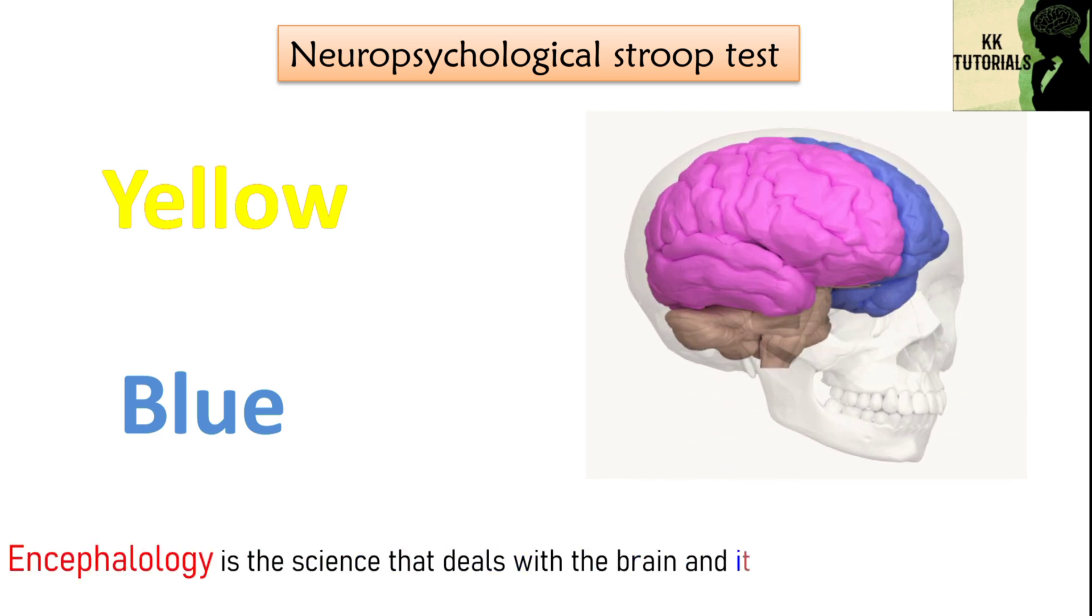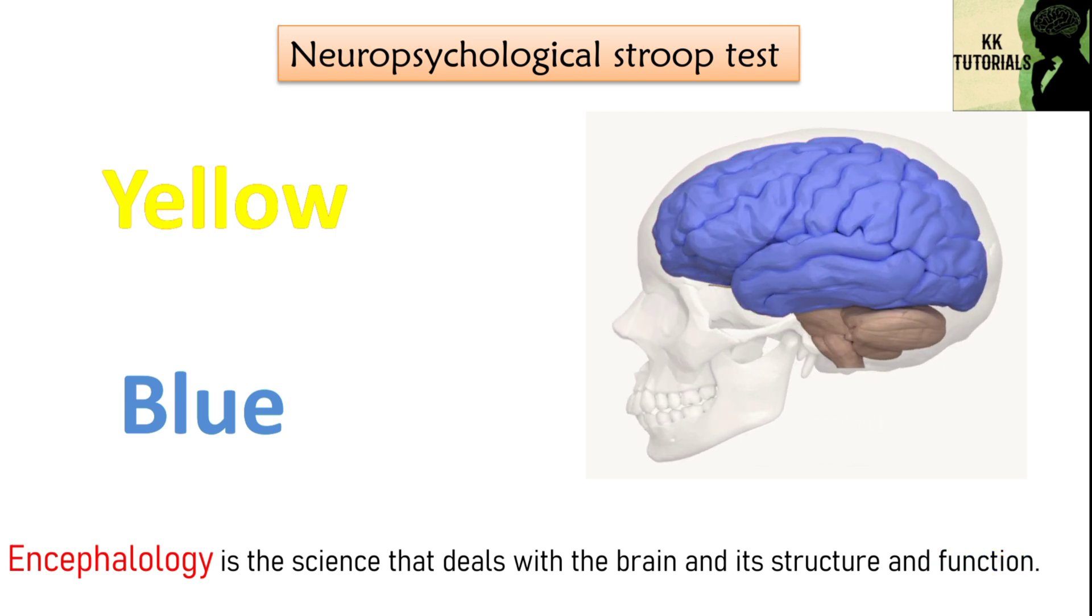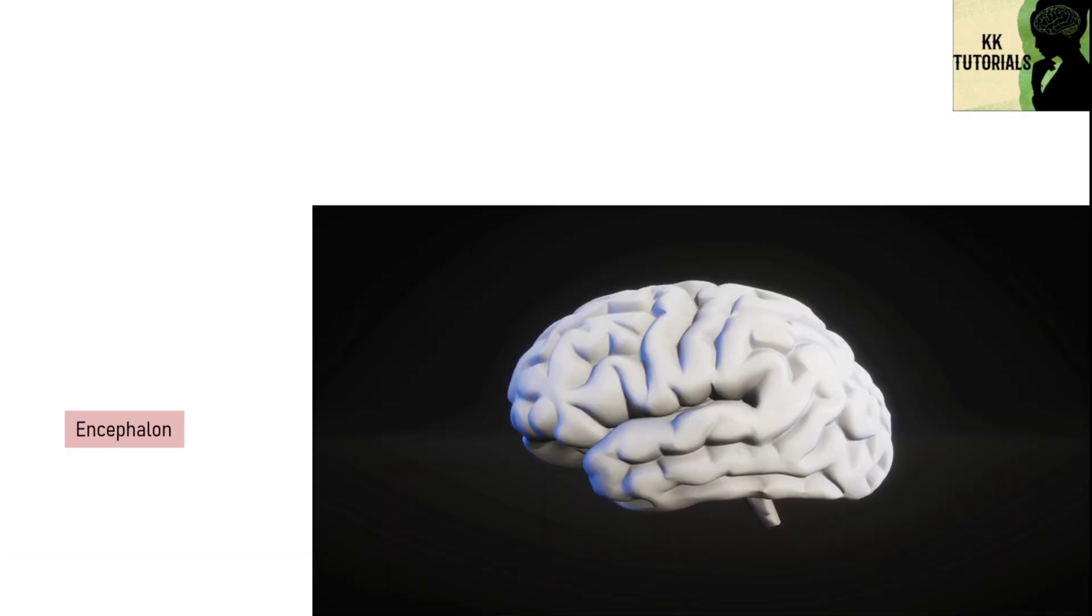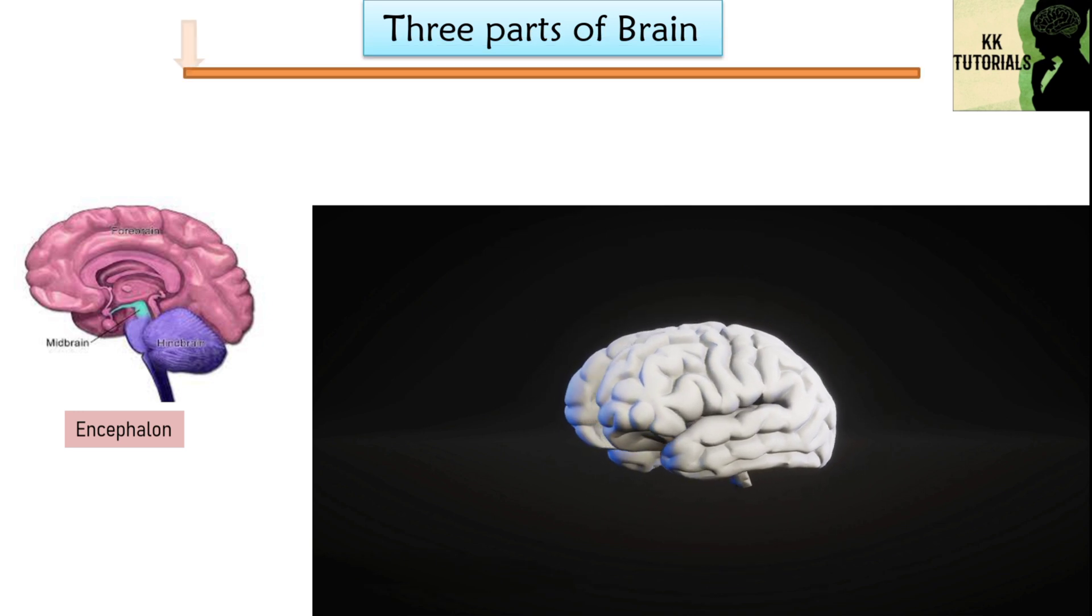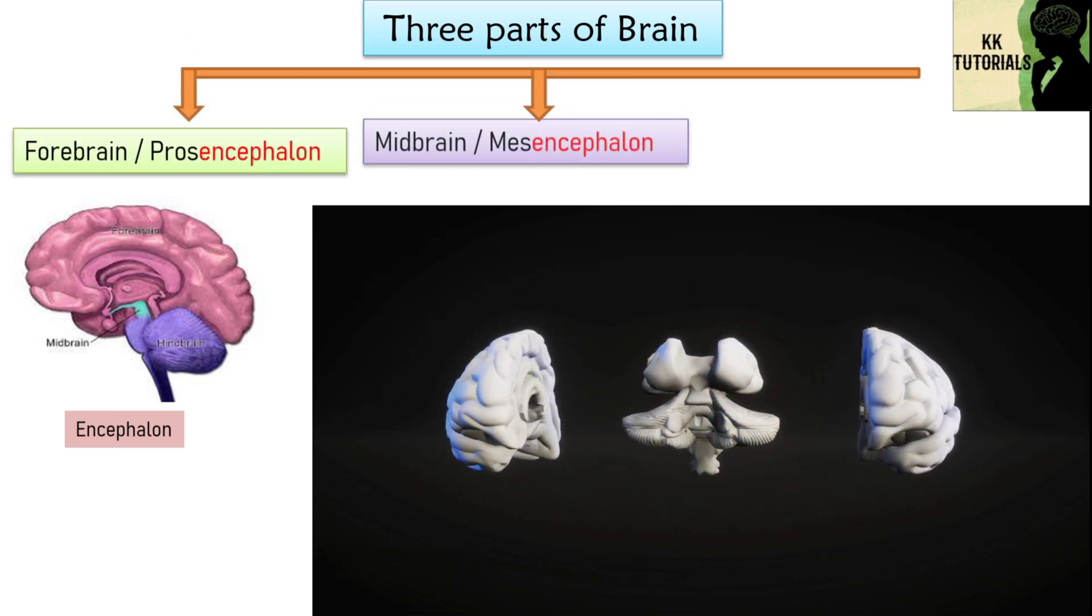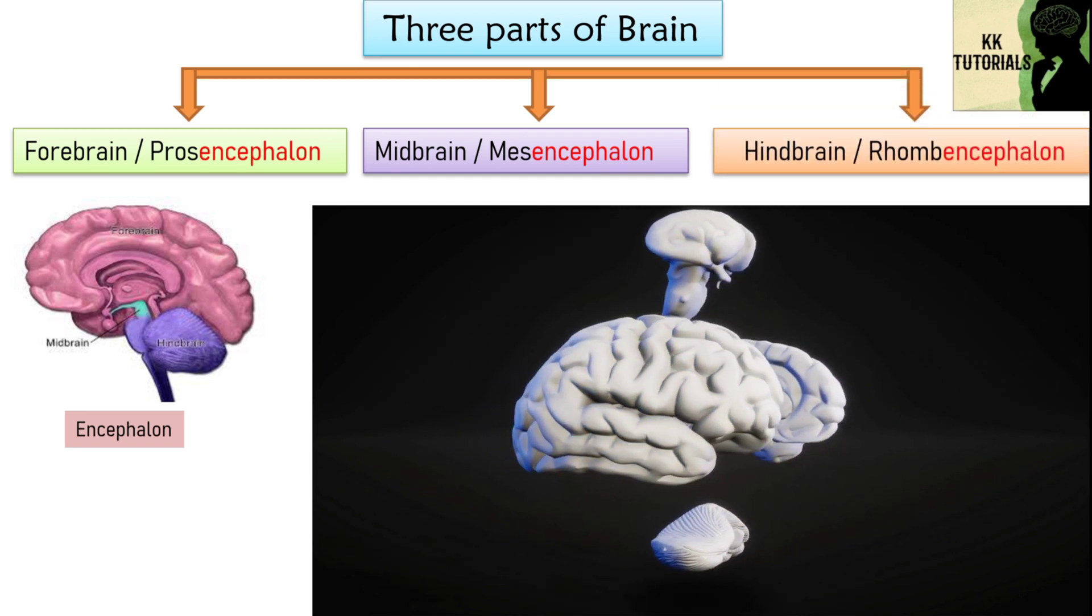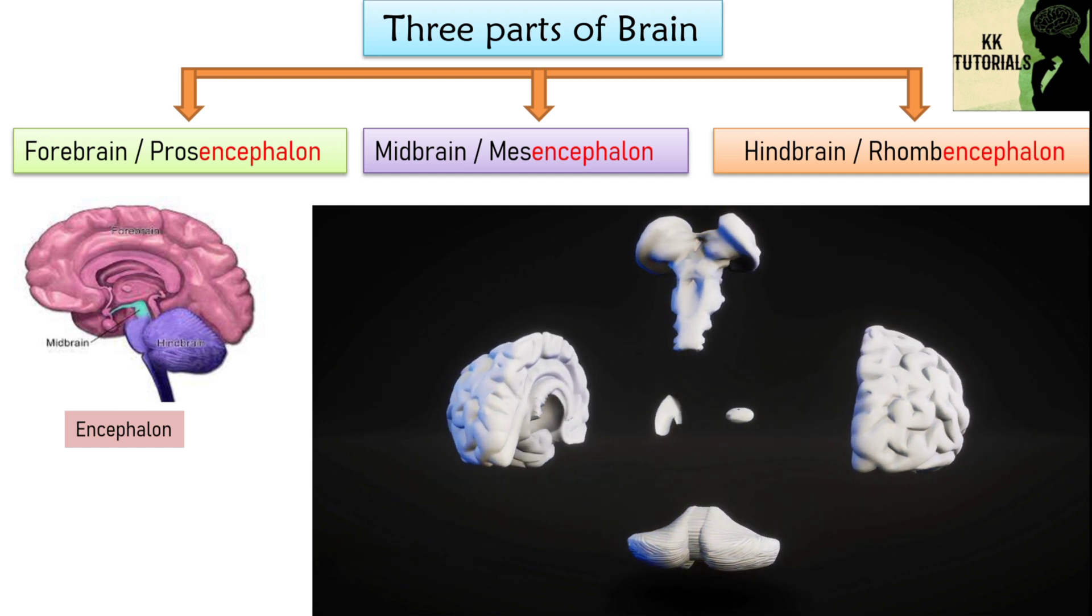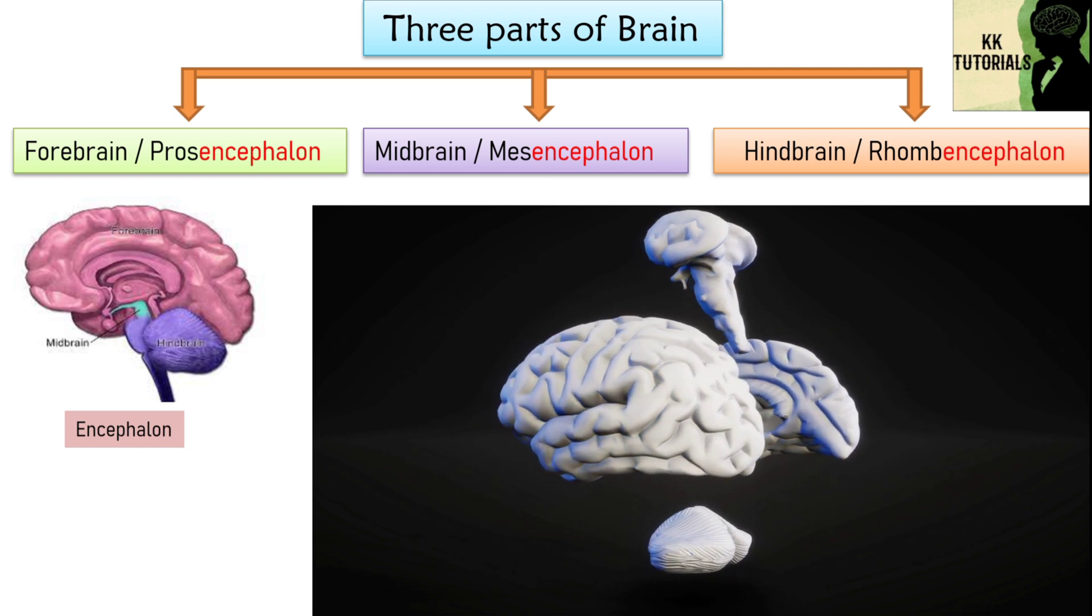Encephalogy is the science that deals with the brain and its structure and function. Human brain is divided into three parts. They are forebrain also called as prosencephalon, midbrain also called as mesencephalon and hindbrain also called as rhombencephalon. In image you can see all these three parts of brain. Just try to remember these parts. You know they are not that much difficult.